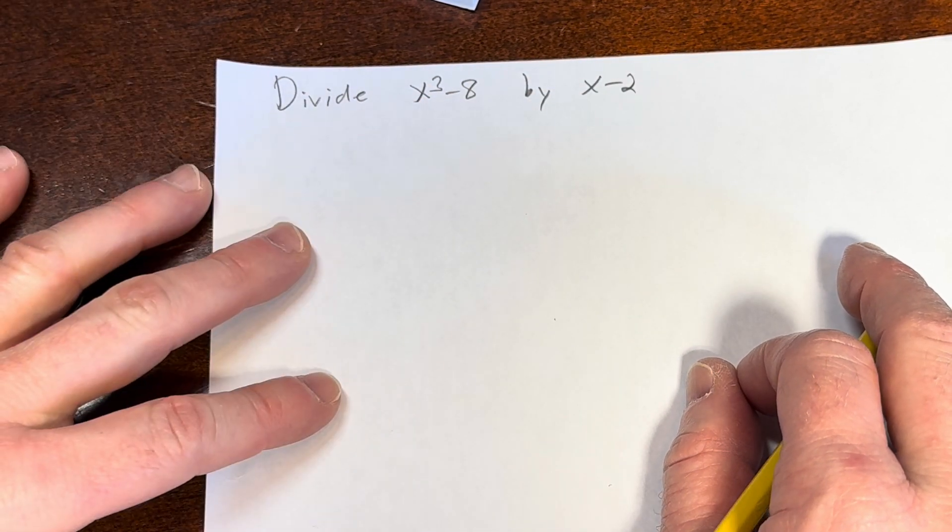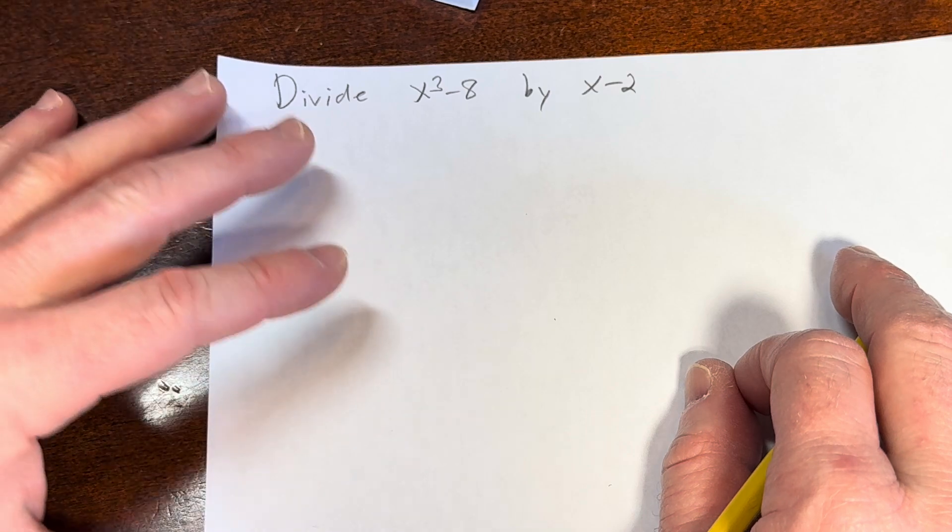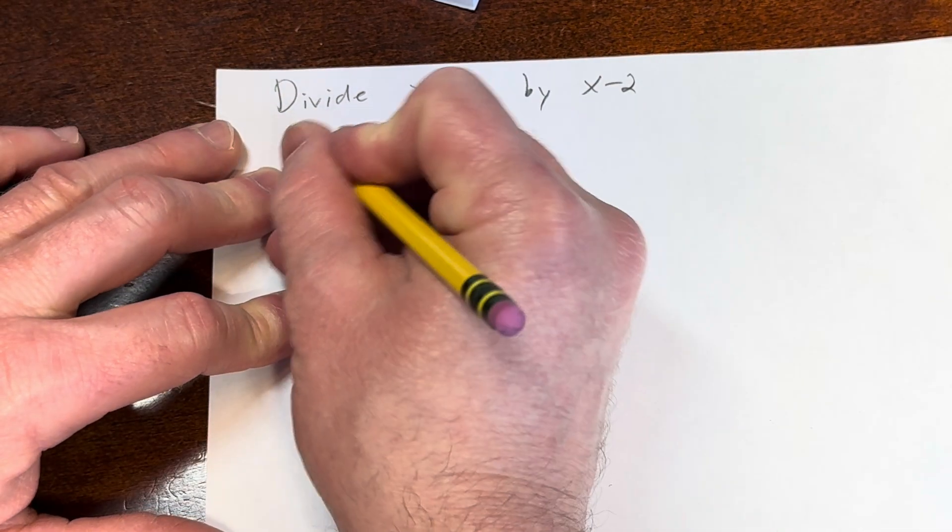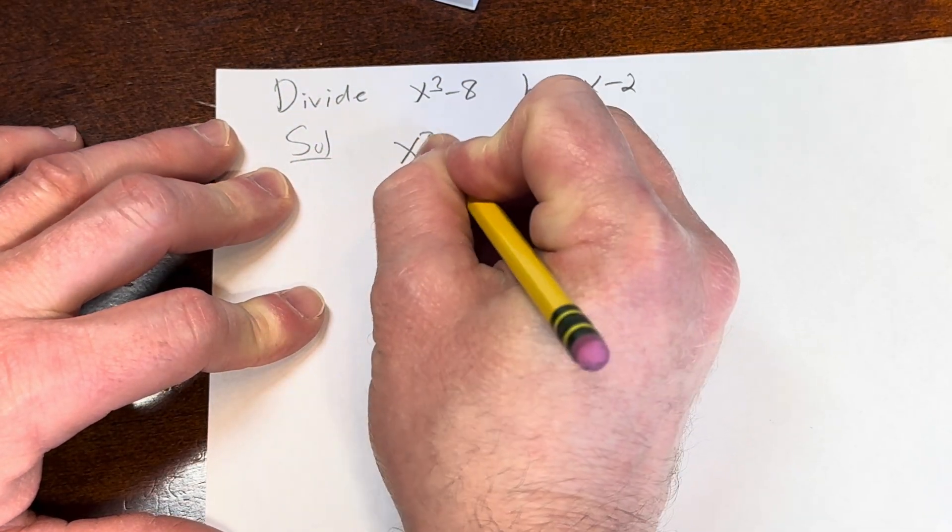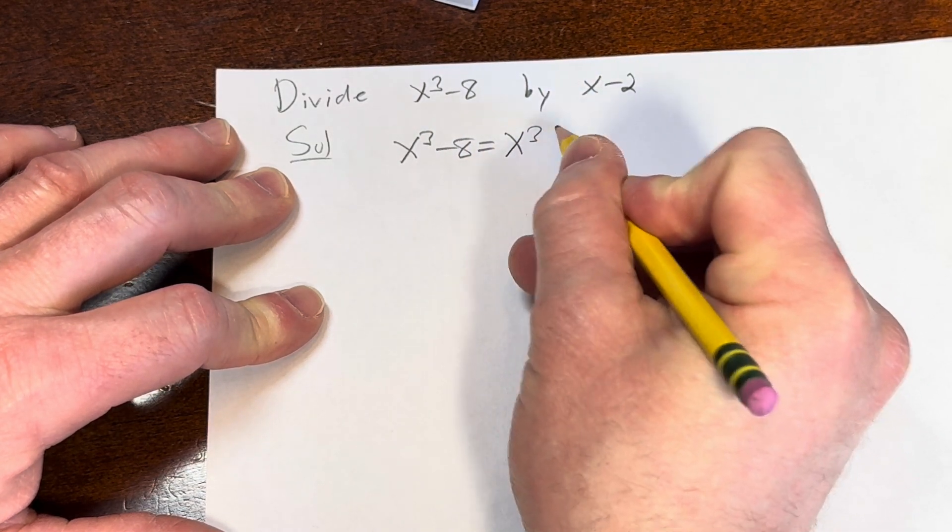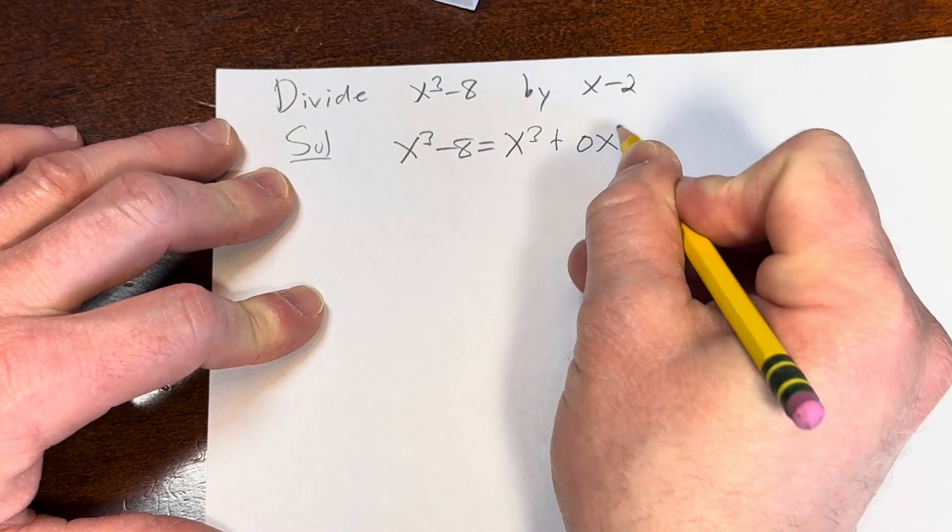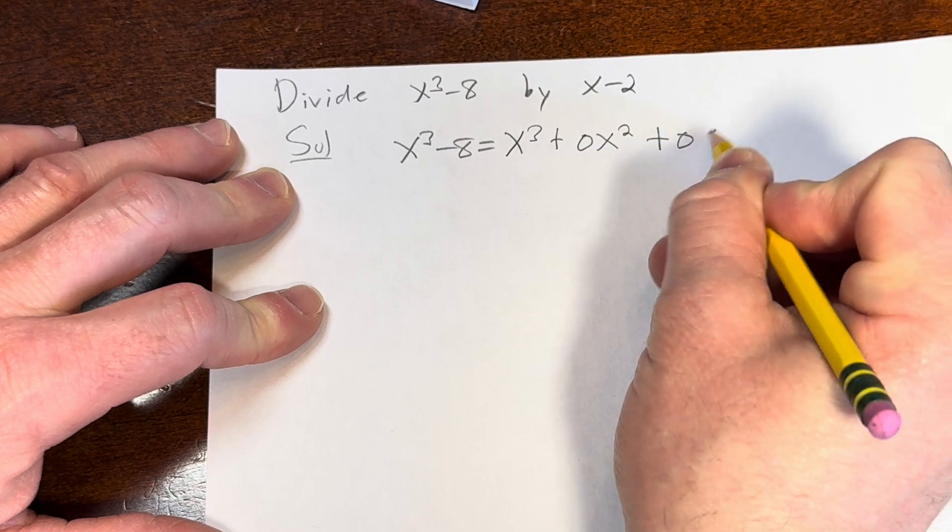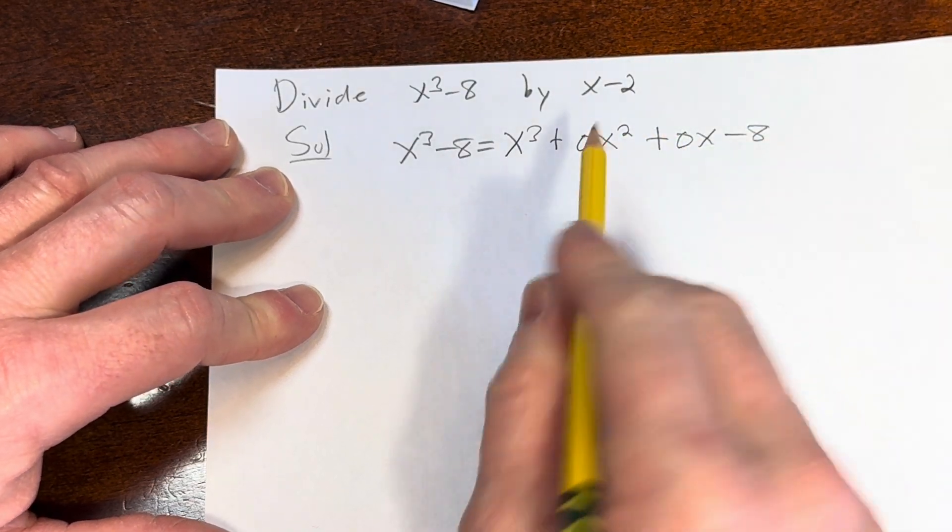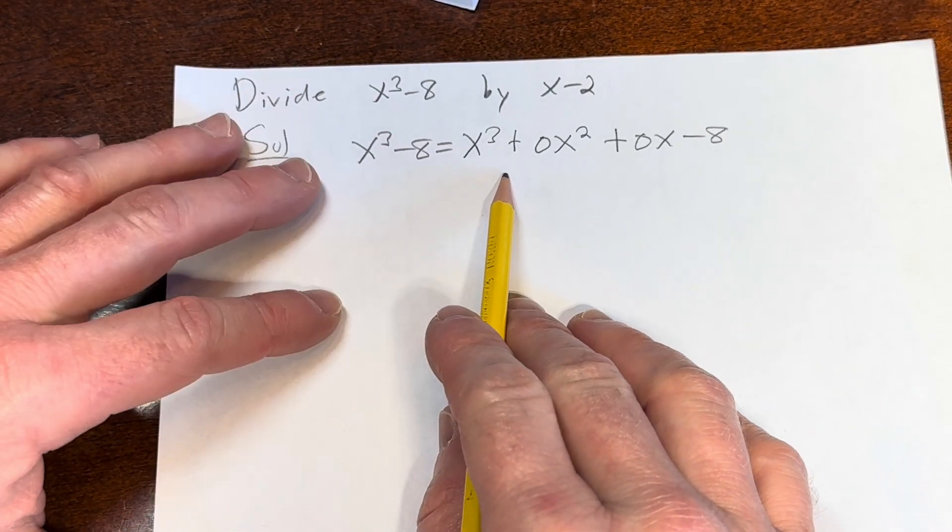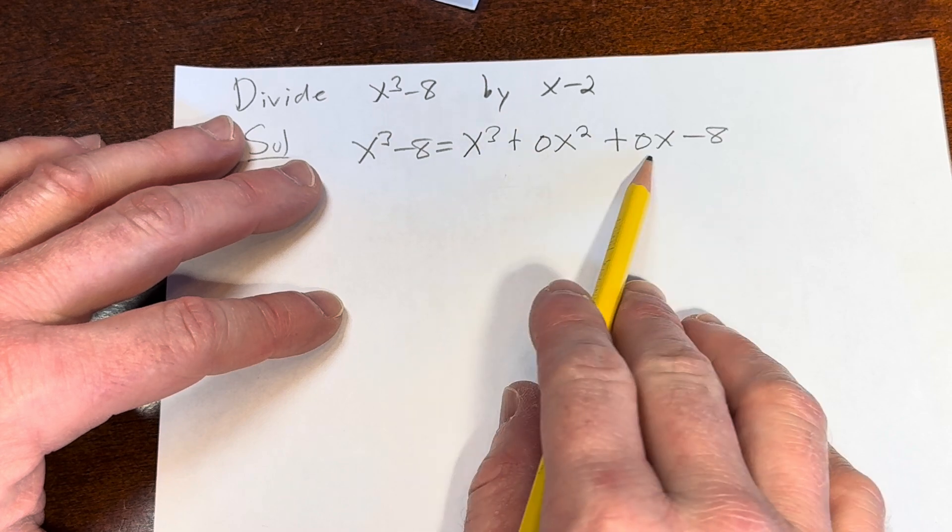The very first step is to write down all of the coefficients. You should know that x cubed minus 8 can be written as x cubed plus 0x squared plus 0x minus 8. And it's important to at least recognize that so you know to write down the zeros.